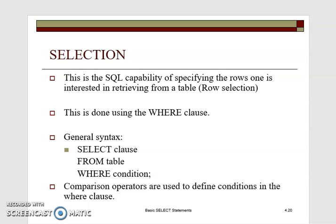The selection capability is the SQL capability for specifying the rows one is interested in retrieving from the database. This is done by using the WHERE clause. You can see the SELECT clause, then FROM the table, and then you specify the condition. For example, you can say SELECT FROM student WHERE registration number is equal to a specific value. The WHERE clause tells you specifically what row you want to return.